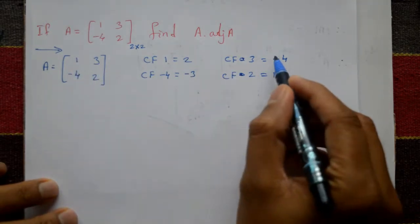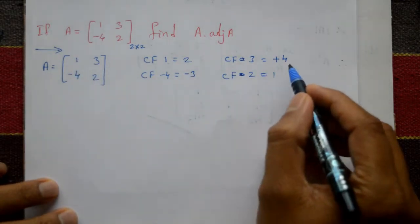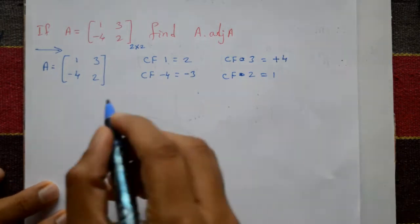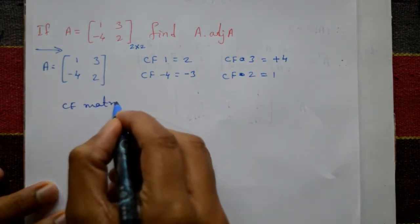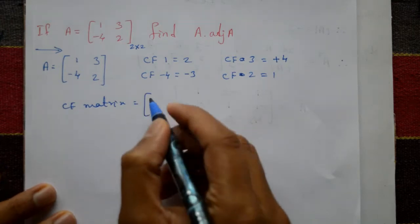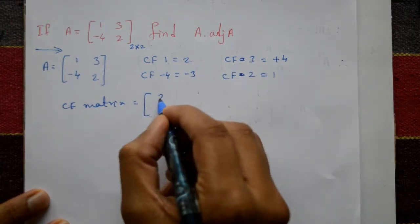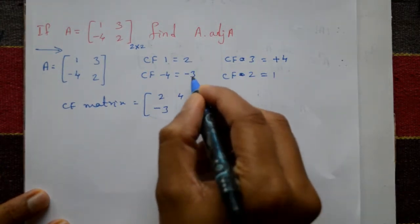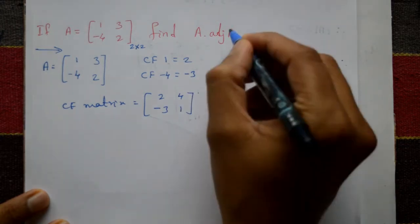Now see the plus-minus-minus-plus pattern like this. Minus into minus gives plus 4. The cofactor matrix of A is [2, 4; -3, 1]. But we require the adjoint of A.